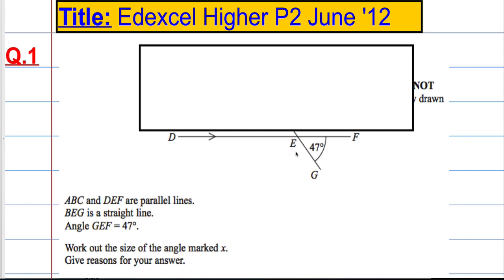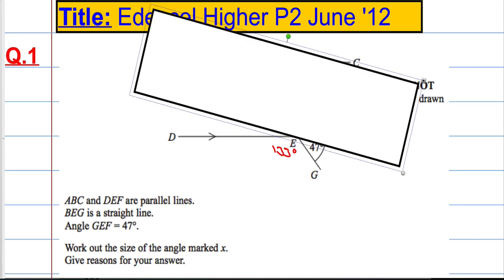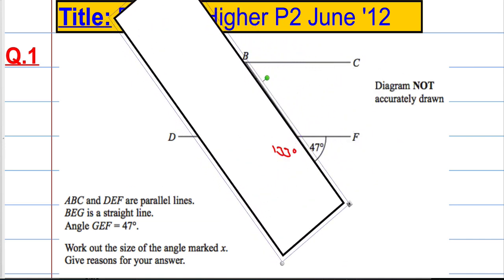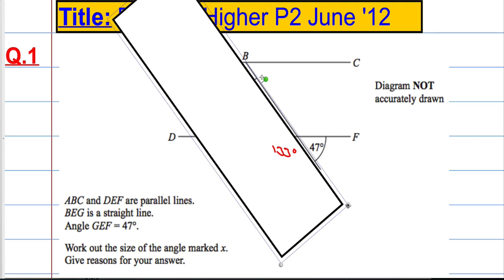Which means that the angle here must be 133 degrees. Similarly, if I was to cover this side, I can see I've got another straight line here and that's 47 degrees, so this must be 133.